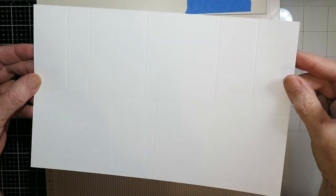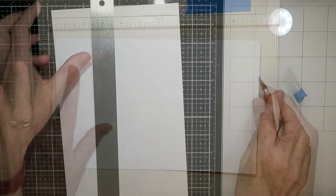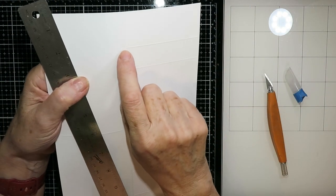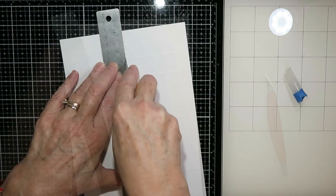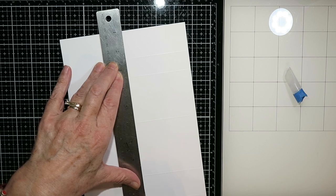So it should look a bit like this when you're done. And then what you want to do is with your craft knife, you're going to cut from that first score line all the way down to the last one right along that pencil line.